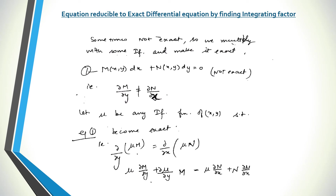This is the fourth video on differential equations. Today I am going to explain how to convert a non-exact differential equation. Basically, you are given any equation of the form M dx plus N dy equals 0, and the given equation is not exact — meaning the partial derivative of M with respect to y is not equal to the partial derivative of N with respect to x. We have to convert this equation into an exact differential equation.